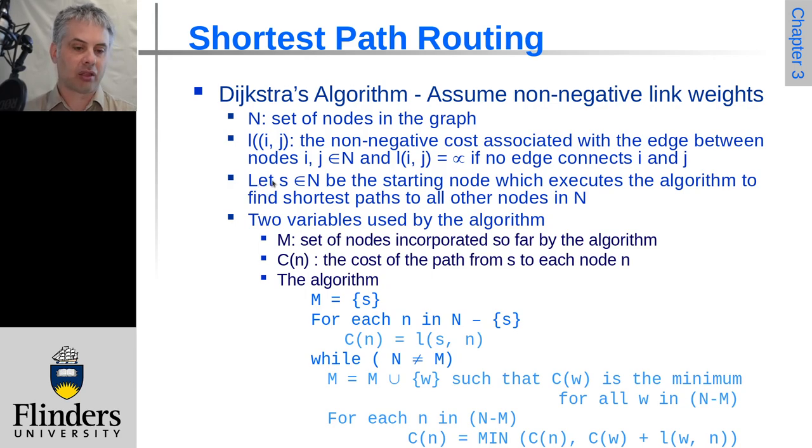So let s be the starting node which starts executing the algorithm. Of course, every node will actually be doing this itself. So the algorithm only needs to keep track of two key things. One is the set of nodes that have already been covered by the algorithm, M, and C(n) is the cost of the path from itself to each node. So we start out by saying that the set of nodes already visited is only the node which is doing it itself. So M equals the set containing only s.